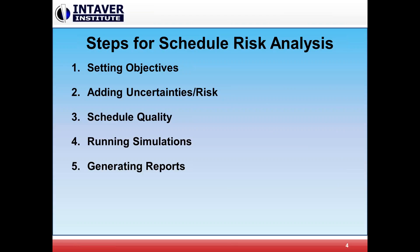So, steps for schedule risk analysis. I've broken it down into five high-level steps: setting the objectives, adding uncertainties or risk, schedule quality, running your simulations, and generating reports. The setting objectives part is really about why are we doing this and what are you trying to get out of it, and that will set the stage for all the other aspects of what you're going to be doing.